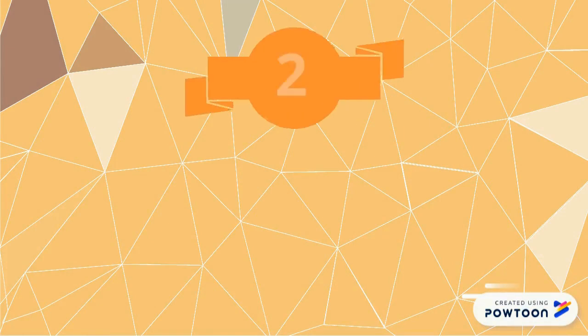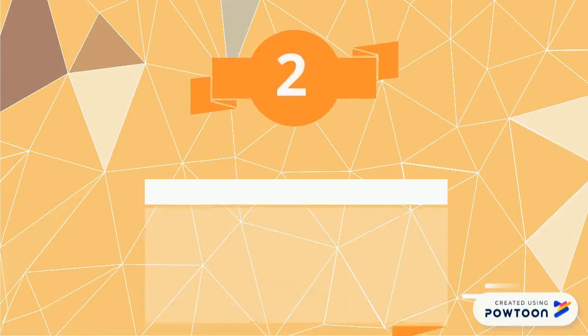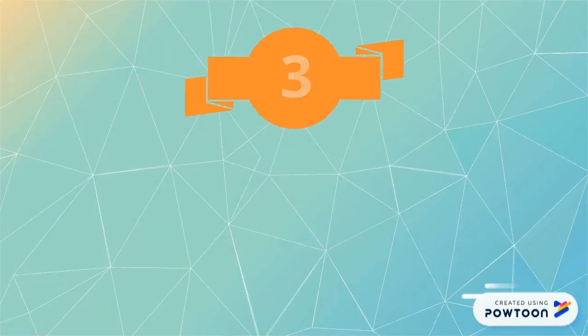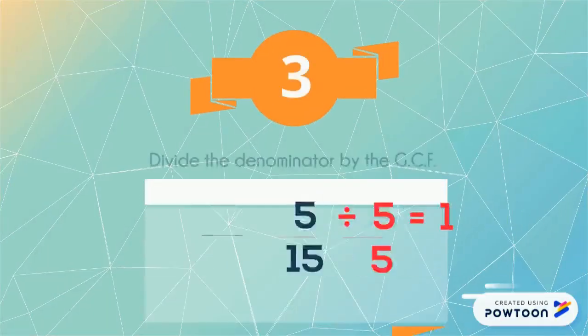Step 2: Divide the numerator by the greatest common factor. When we divide 5 by 5, we get 1. So 1 is our new numerator.